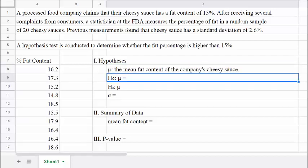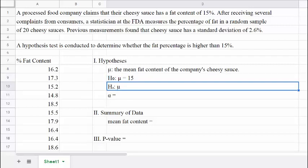The null hypothesis should say that there's nothing to worry about here. The mean fat content is actually 15%. The alternative hypothesis should say that the mean fat content is actually higher than 15%.